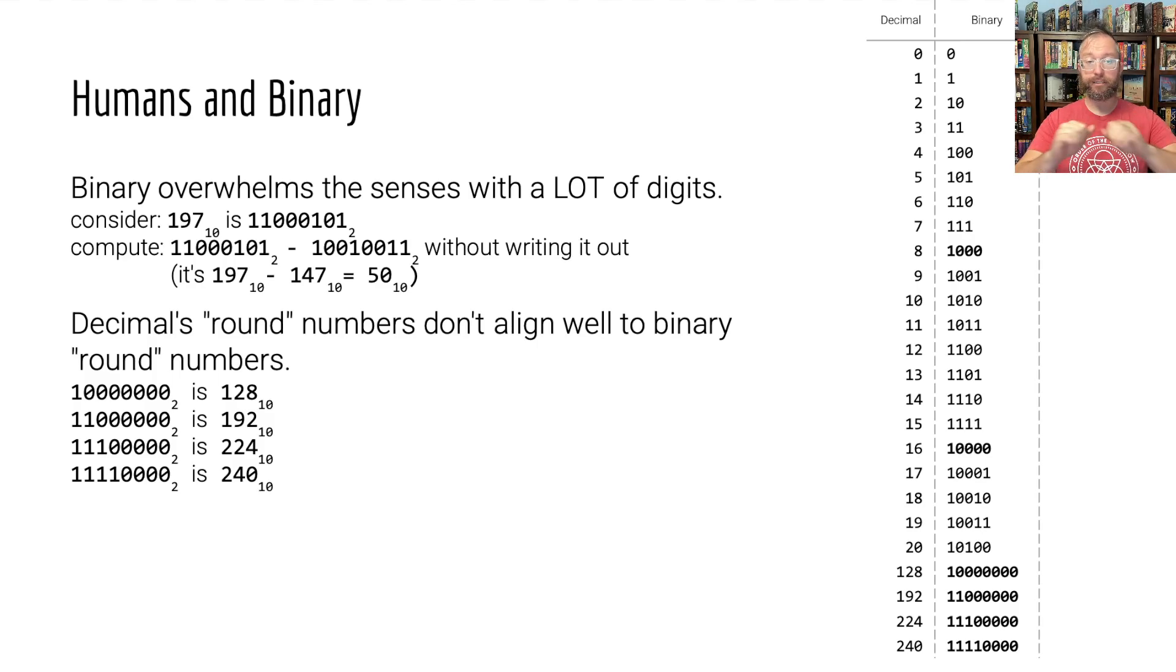So in base 10, because we have 10 fingers, as I keep showing you, you count up to nine and then you have a nice round number, 10. You count up to 19, then you have a nice round 20, and then you count up to 99 and then you have a nice round 100.